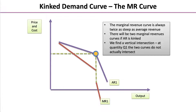We can take this one step further and look at the marginal revenue curve. The marginal revenue curve is always twice as steep as the average revenue curve. Therefore, there will be two marginal revenue curves if the average revenue curve is kinked, and we find a vertical intersection at quantity Q1, indicated by the green dashed line on your screen.